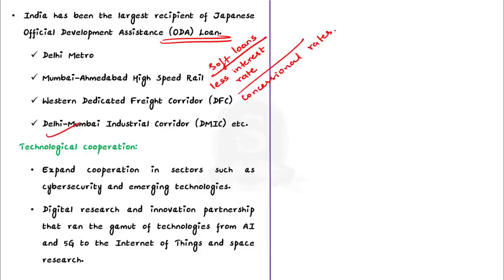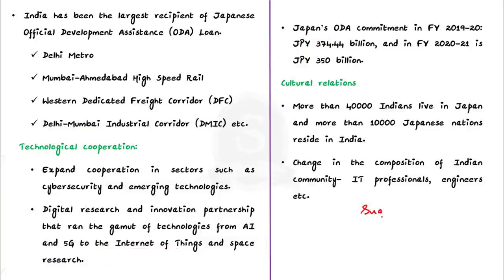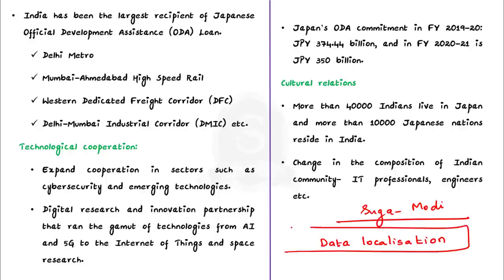In the realm of technological cooperation, the two powers look to expand cooperation in cyber security and emerging technologies. During the Shinzo Abe years, New Delhi and Tokyo put together a digital research and innovation partnership spanning artificial intelligence, 5G, Internet of Things, and space research. Mr. Suga and Mr. Modi may look to deepen cooperation between research institutes, especially to counter China's technological investment program — China has proposed investing about $1.4 trillion for its technological development. However, data localization policy is a sore point: India favors data localization, but Japan and many Western countries believe in free flow of data across borders.